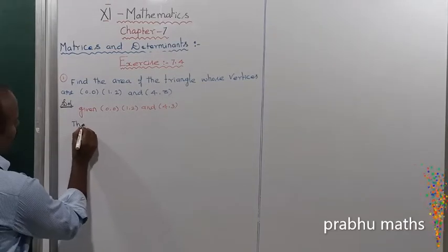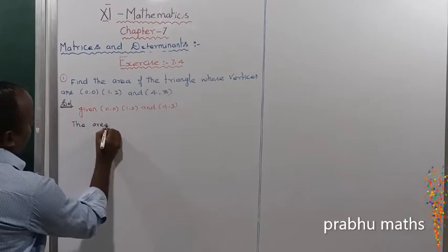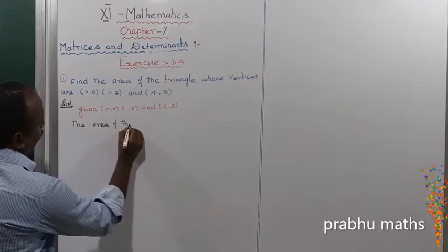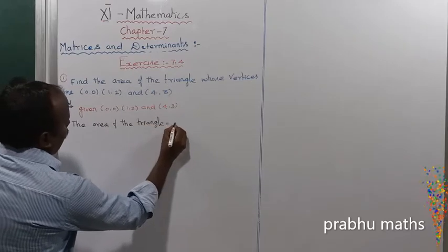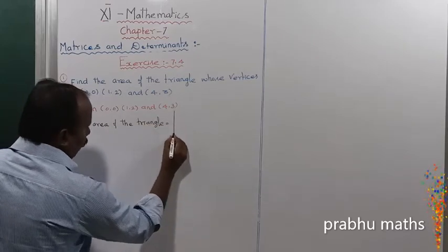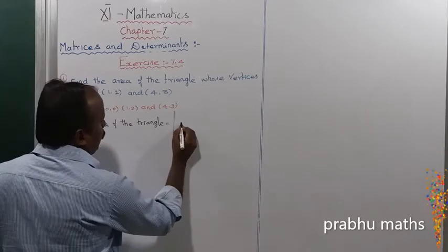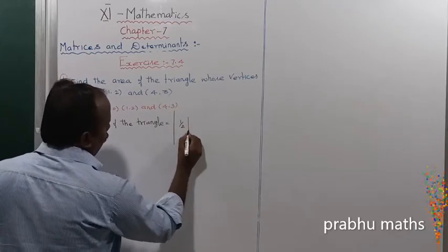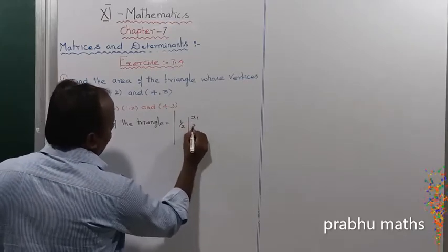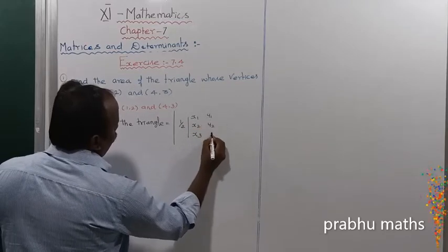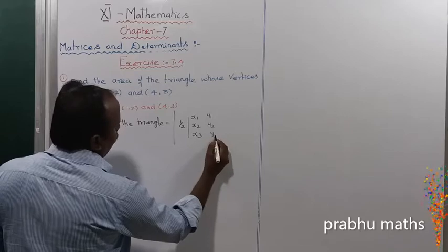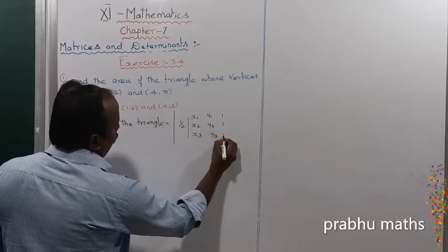The formula for the area of the triangle is equal to the modulus of 1/2 times the determinant of X1, X2, X3, Y1, Y2, Y3, 1, 1, 1.